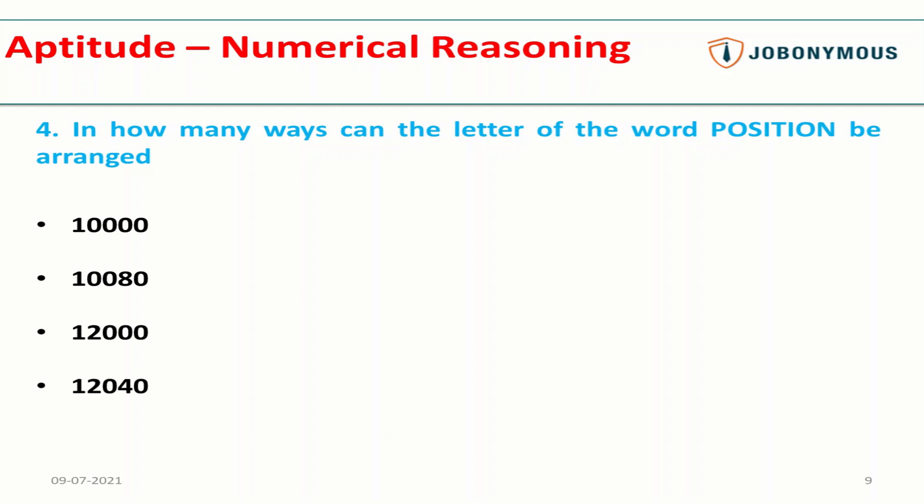Next question: In how many ways can the letters of the word POSITION be arranged? This is a question from permutations and combinations. Here you can apply a simple formula, which is the total number of letters. In this word, there are 1, 2, 3, 4, 5, 6, 7, 8 letters, so eight factorial divided by...